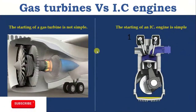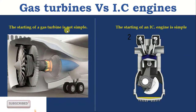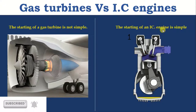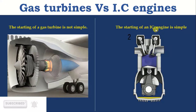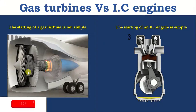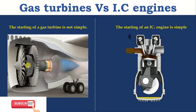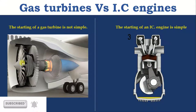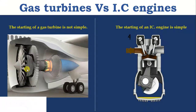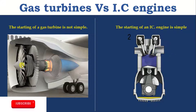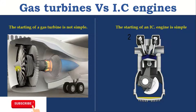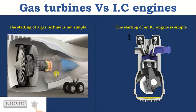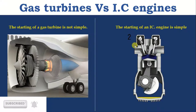First, the starting of a gas turbine is not simple, whereas the starting of an IC engine is simple. This is due to the compressor in the gas turbine. Initially, the compressor runs using backup power such as a battery, and later it consumes about 70% of the power produced by the turbine. Such difficulties are not present in IC engines.